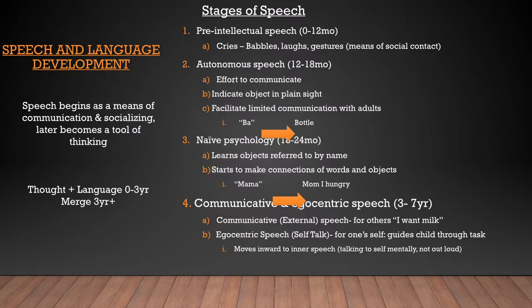Once we pass the pre-intellectual speech stage, we go into something called autonomous speech, which occurs between one and one-and-a-half years old. We start to notice the child is trying to communicate with the parent and express their needs without always crying for hours. This facilitates some limited communication with adults. They can indicate what an object is in plain sight — if they want their bottle, they can point to it without saying the word and still get the meaning across. They might say 'bah,' and soon enough that 'bah' will be associated with the word 'bottle.'